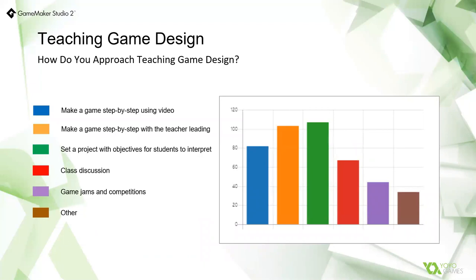More generically and broadly, this is how teachers approach the teaching of game design from the survey. What we can see here is that predominantly the teacher sets a project with objectives for students to interpret. That tends to happen more at age 15 and 16, whereas at 12 to 14 you tend to see more situations where a game is being made step by step with the teacher leading or just using video, and obviously at that point you also tend to bring in the fundamentals of coding as well.